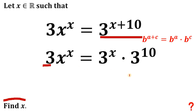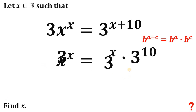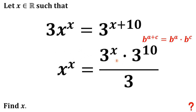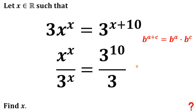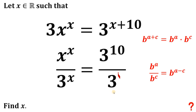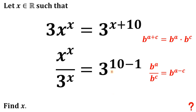Now let's divide both sides by 3, because we have the value of x, and then divide both sides by 3 raised to the power of x, or simply rearrange some terms. We will use again some laws of exponents. Note we have an exponent of 1. If we have the same base, b raised to the power of a over b raised to the power of c, we can rewrite this as b raised to the power of a minus c — we subtract the exponents. So the right-hand side becomes 3 raised to the power of 10 minus 1, and 10 minus 1 equals 9.